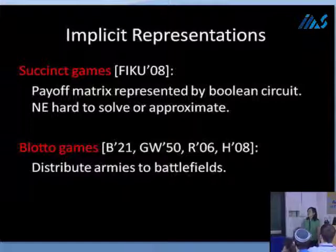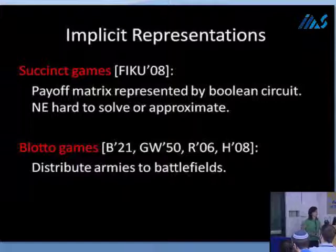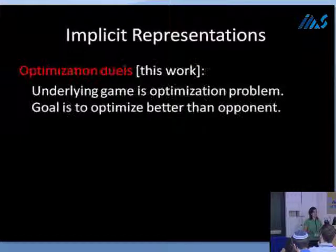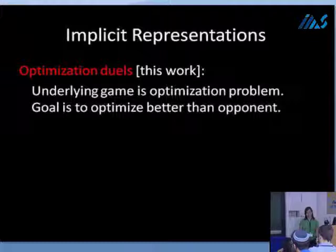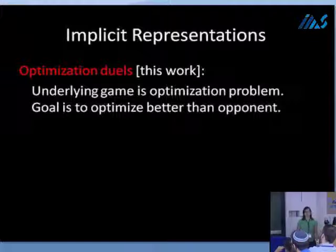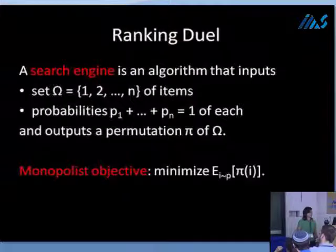These are examples of constant-sum games that are not simple to solve by a direct LP approach. We have another example in this paper: an implicit representation of a zero-sum game we call optimization duels. In our paper, the underlying game is an optimization problem, and your goal is to optimize better than your opponent. I'll introduce this through an example of a particular duel — the ranking duel — and then give you the general framework.